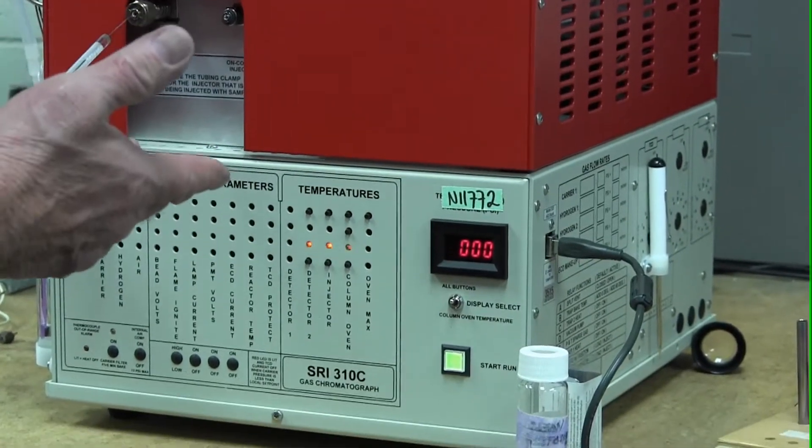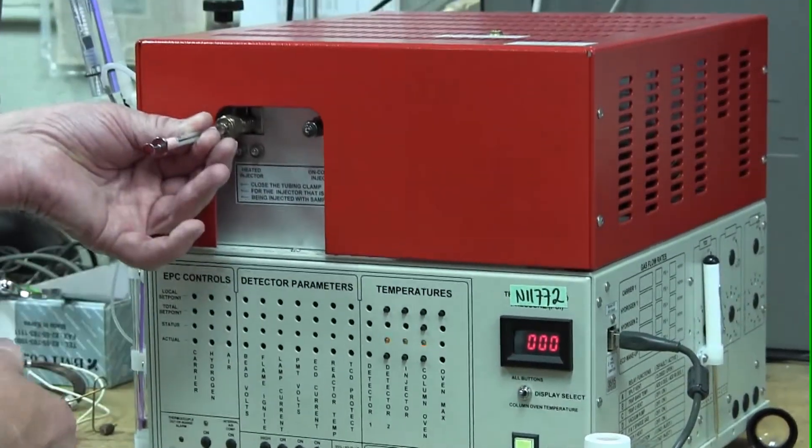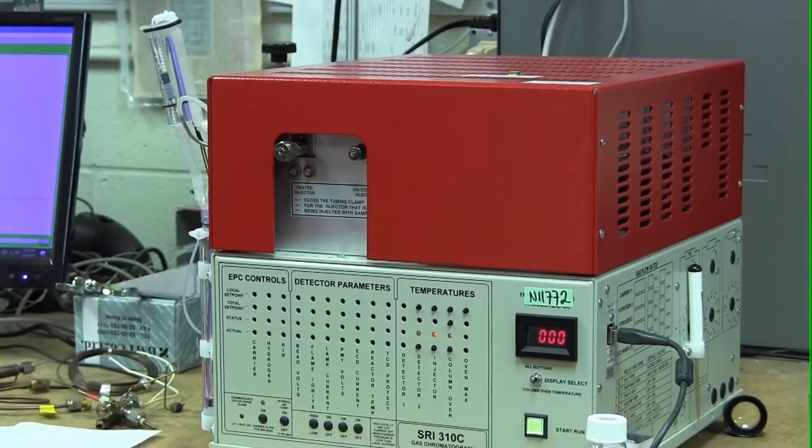So it's going to take me a second or so, but here we go. Hit the start button, all the way in right up to the hilt, depress the plunger, and then pull it out. So that made the injection.